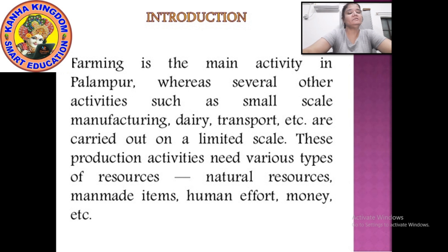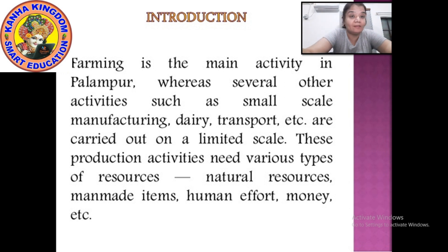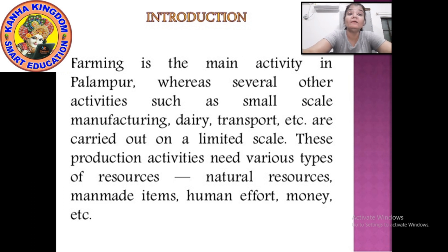Natural resources, man-made items and human effort, money — here we will see how various resources combine to produce the desired goods and services in the village. The non-farming activities which are there in village Palampur — how are these being carried out? The goods and the services in the village — how do they produce, how do they combine, how do they sell?